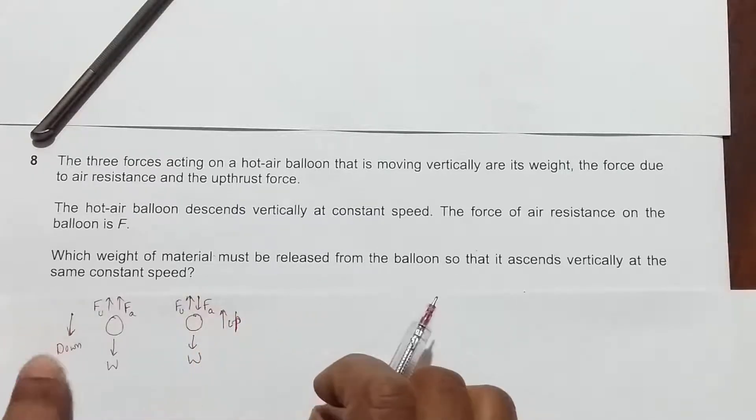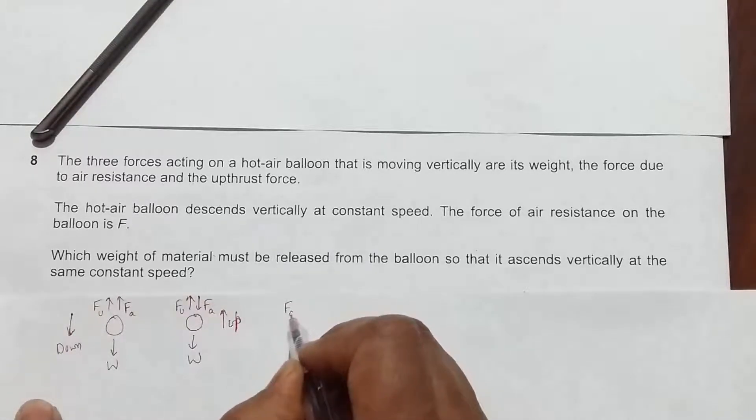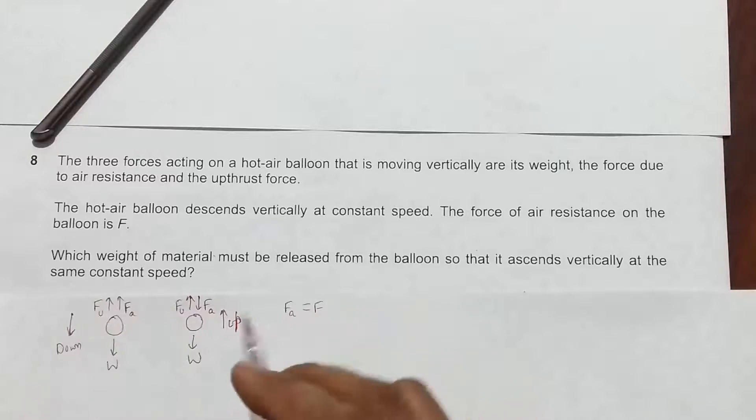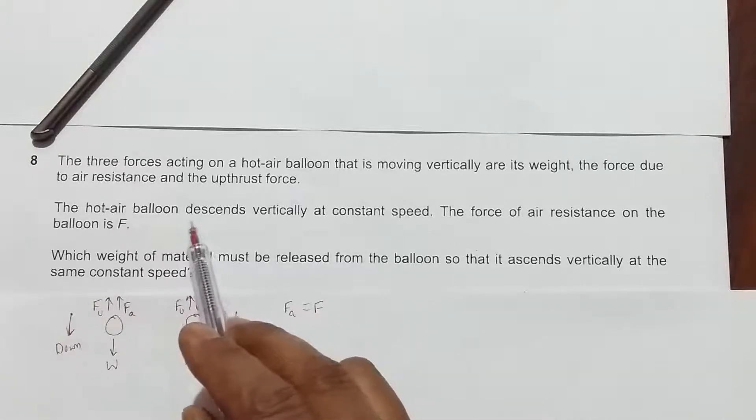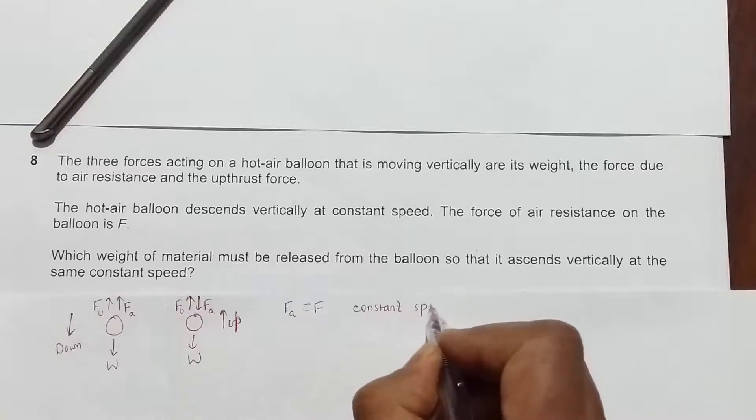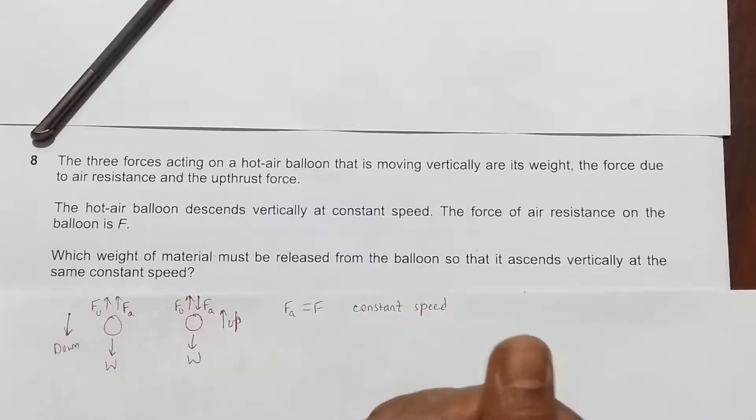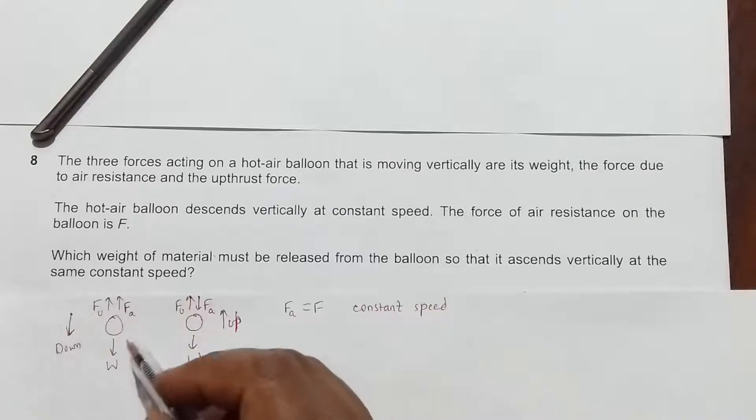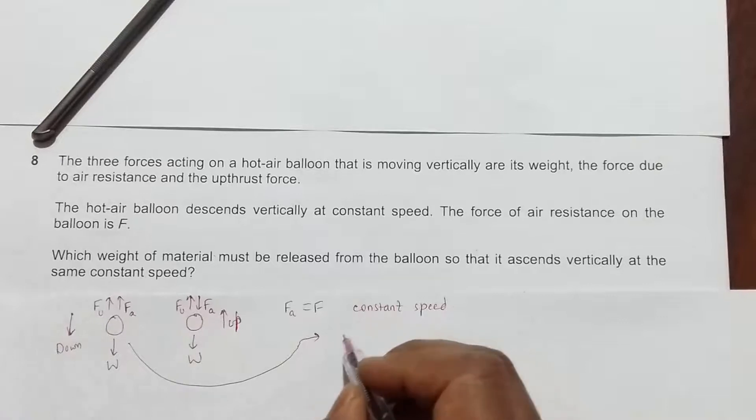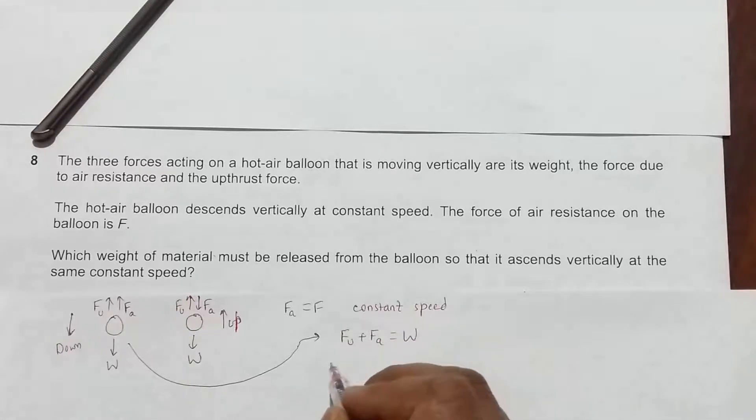In this case it's given that in the first case it's descending vertically at constant speed. Constant speed means that the total upward and downward force on the body should be equal. So in the first case we must have F_U plus F_A equal to W.